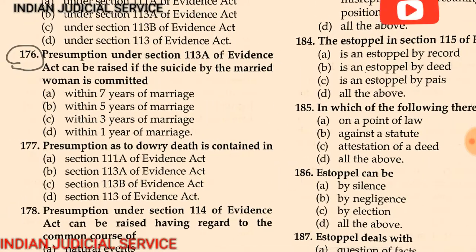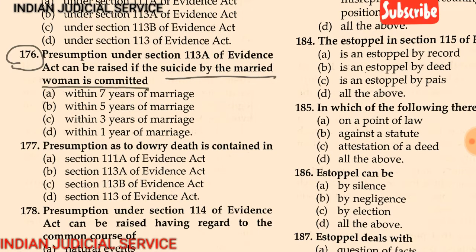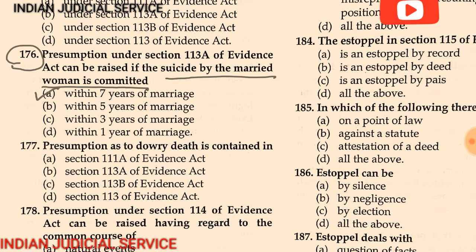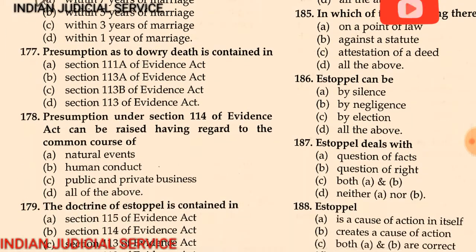Question 176: The presumption under section 113A of the Evidence Act can be raised if a suicide by a married woman is committed within — (A) seven years of marriage, (B) five years of marriage, (C) three years of marriage, (D) one year of marriage. The answer is: within seven years of marriage. According to section 113A of the Evidence Act, the presumption arises if the suicide by a married woman is committed within seven years of marriage.